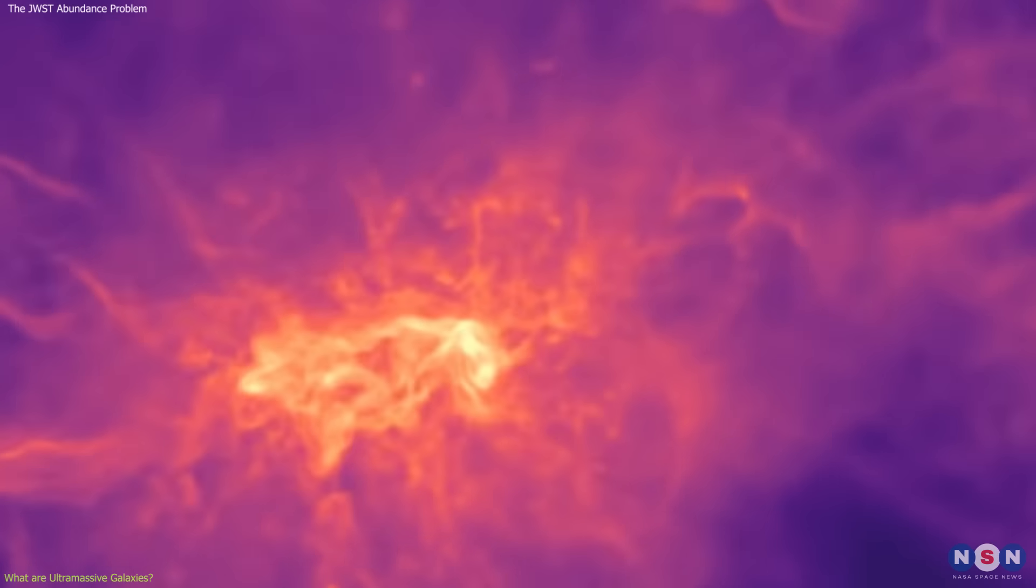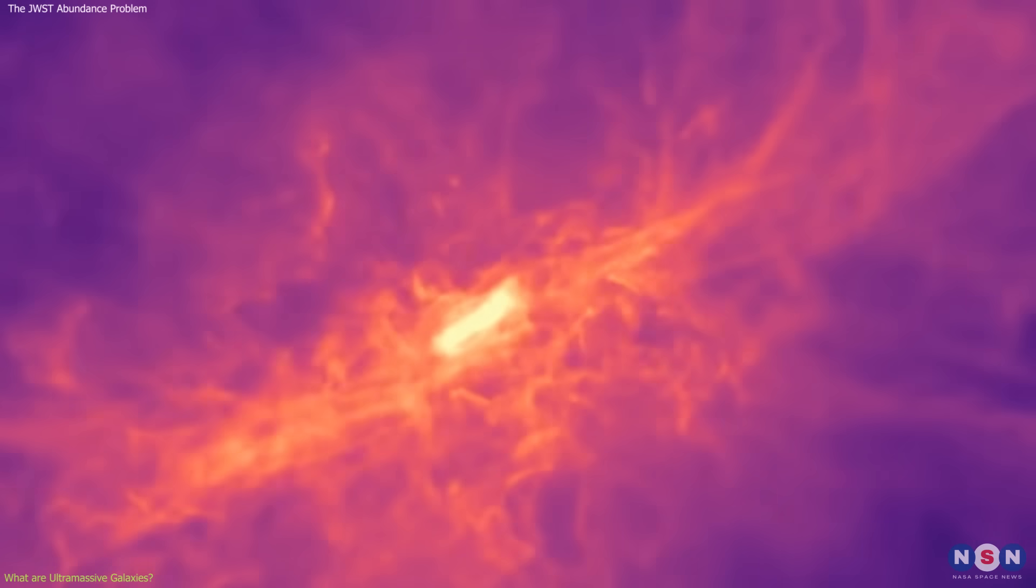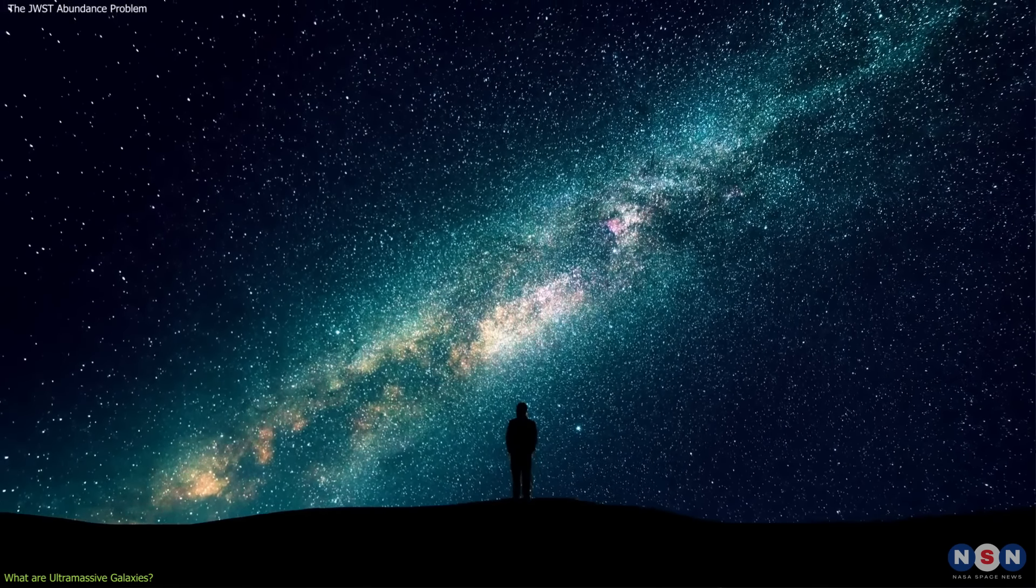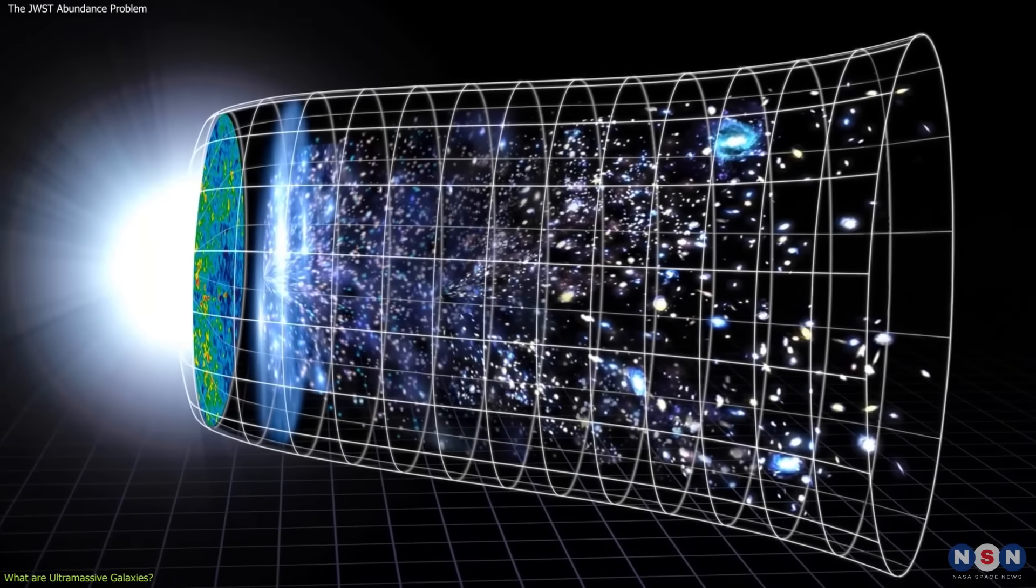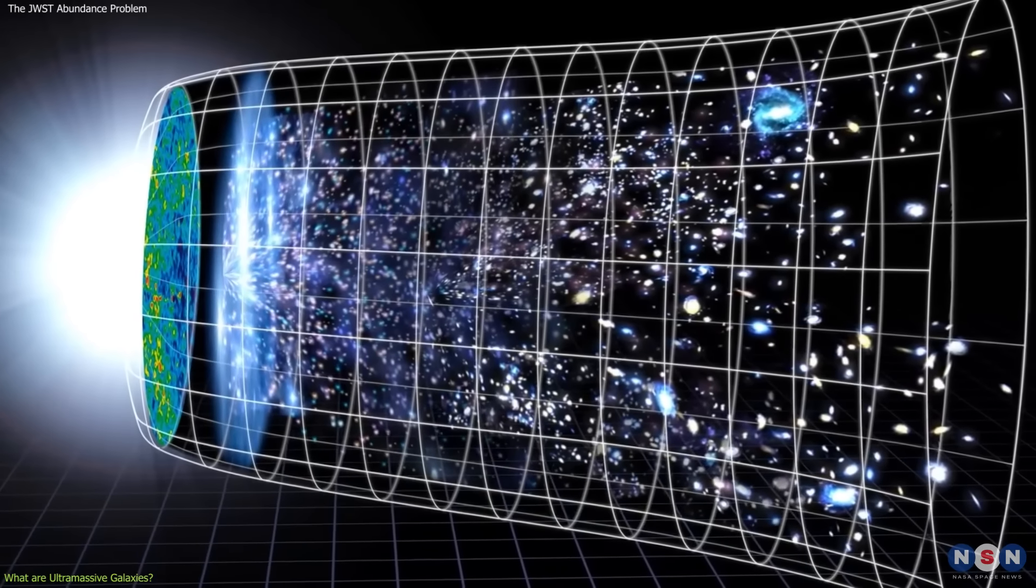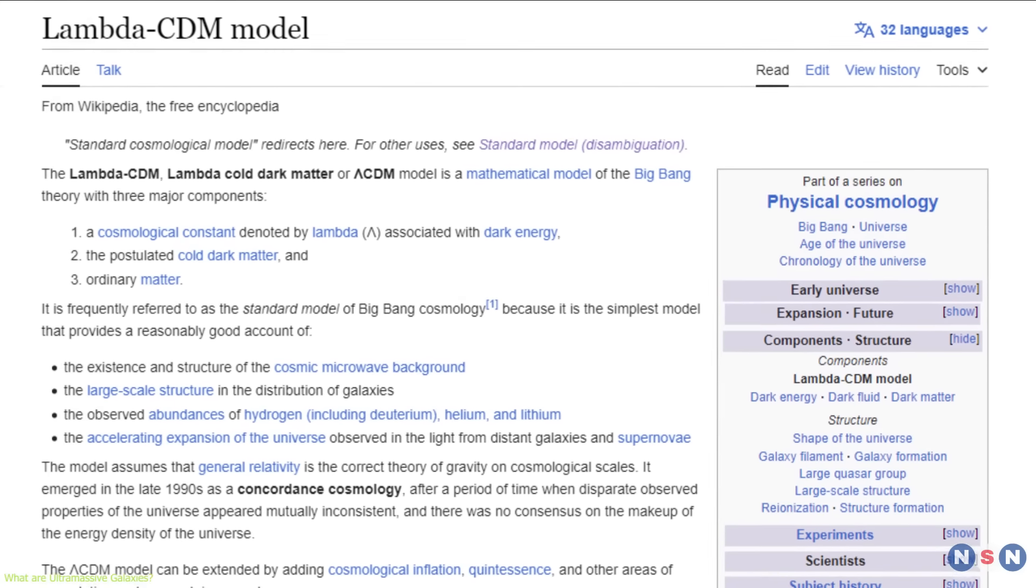So how did these galaxies form and grow so quickly in such a short time? This is the question that puzzles astronomers and cosmologists, because it seems to contradict the standard cosmological model, which is based on the Lambda Cold Dark Matter model.